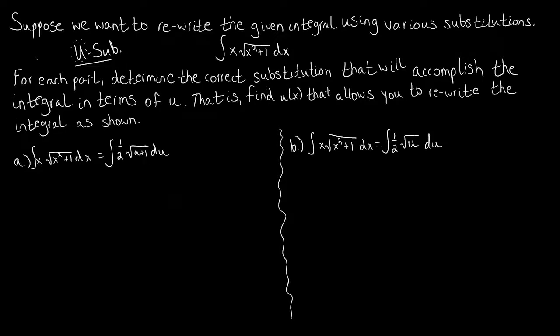What we have for our prompt is we want to suppose we want to rewrite the given integral using various substitutions. This is the integral we have here: the integral of x times the square root of x squared plus 1, all with respect to x. With each part of the question — there are three of them — part C is hidden down below the screen right now.